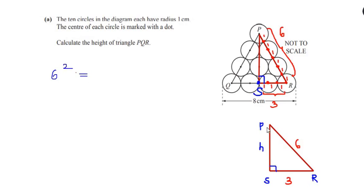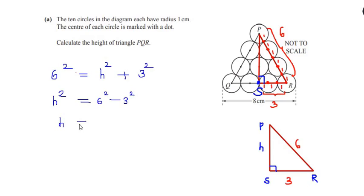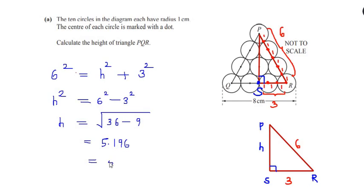So it becomes h² + 3² = 6². Rearranging, h² = 6² − 3² = 36 − 9 = 27. So h = √27, which gives us 5.196, or rounded to 5.2 centimeters. This is the height of the given triangle.